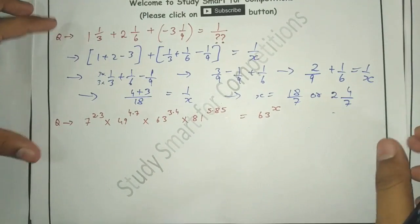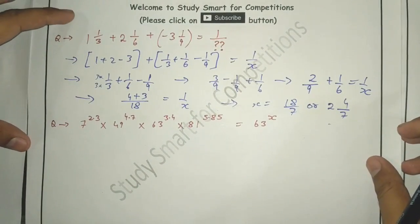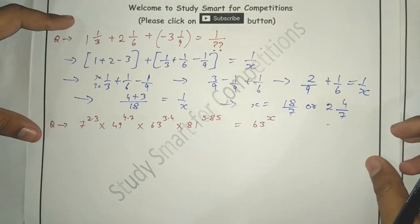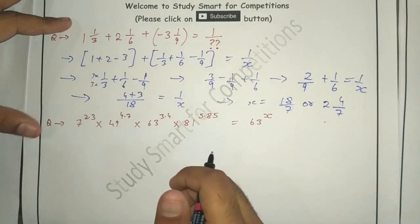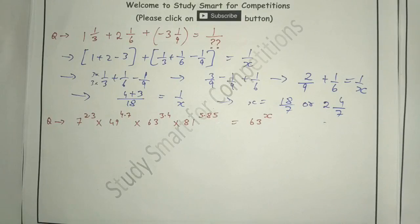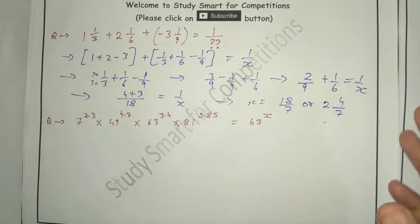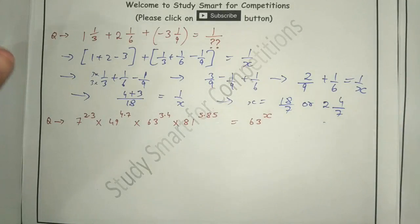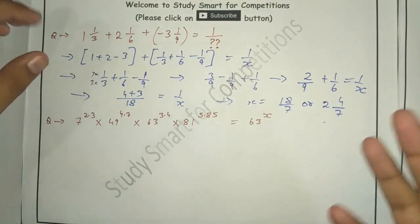Next question is a kind of modern question which we have seen in previous banking exams in SBI and IBPS. I will be preparing you from that perspective as well. It asks 7 raised to the power 2.3 into 14 raised to the power 4.7 cross 63 raised to the power 3.4 into 81 raised to the power 5.85 equals 63 raised to the power x.